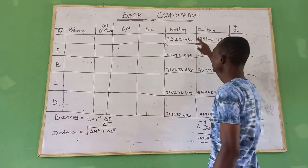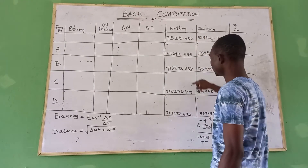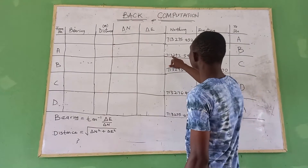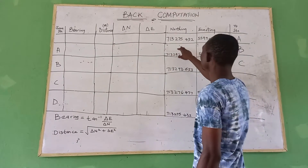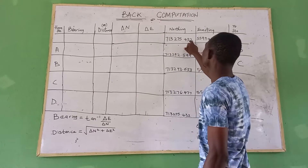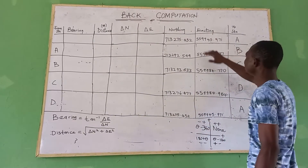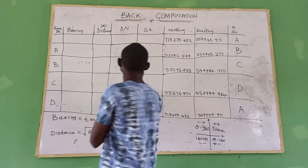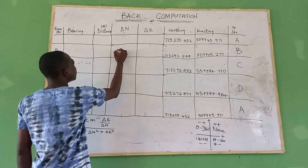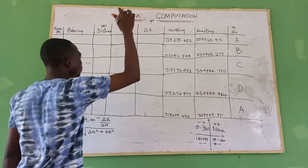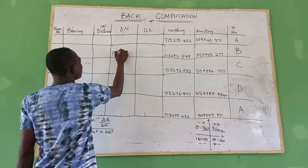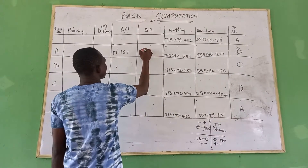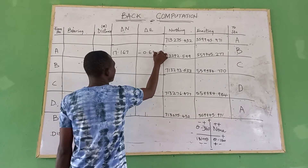We have shortcuts: station B from station A, station C from station B, station D from station C, then station A from station D. For example, 713292.599 minus 713275.533 gives your delta northing of 13.15. Subtracting gives your delta easting. For the next value, we have 17.167 and minus 0.694.